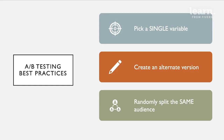Create two or more alternate versions that change just one variable and change nothing else. Then you will randomly split the audience — the same audience — so that each member only sees one version of the variable you have changed. You will test it, get your results back, and be able to determine which direction you need to go in.